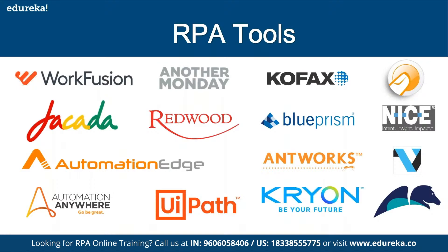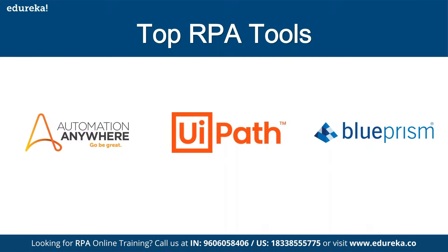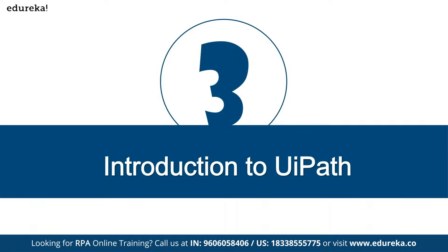The best and leading RPA tools in the market right now are Automation Anywhere, UiPath, and Blue Prism — these are ruling the current RPA market. When compared to the capabilities of these three tools, others have not yet reached there. Automation Anywhere and UiPath are the closest competitors in the market.